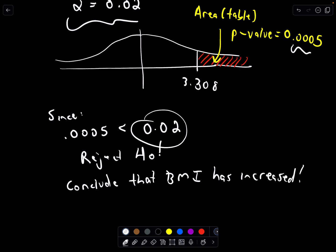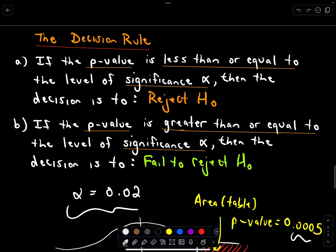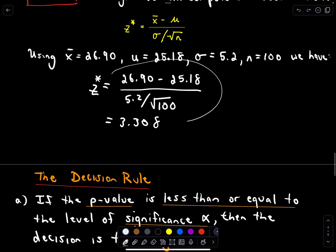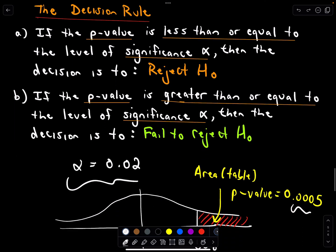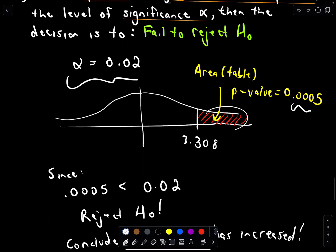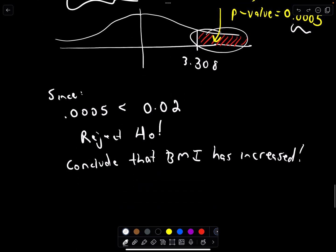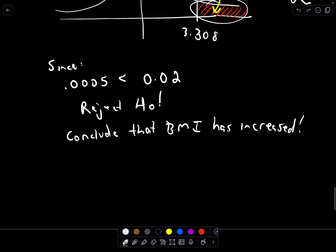All we do is pick our level of significance. We just compute our test statistic. The idea is the test statistic is just too large, 3.308. The tail probability associated with that is 0.0005, which is less than alpha. We reject our null hypothesis and therefore accept the alternative hypothesis. We would conclude that the BMI in that state has, in fact, increased.